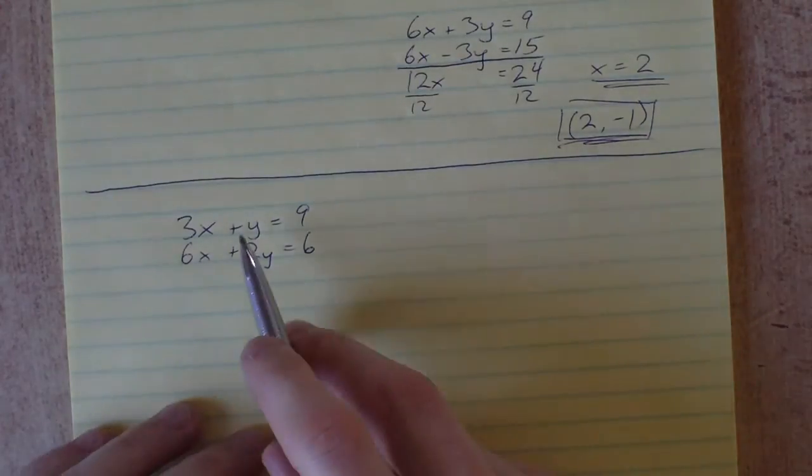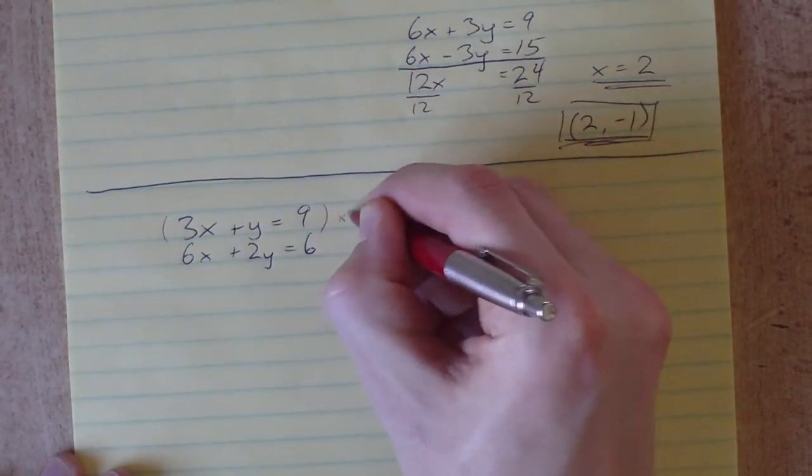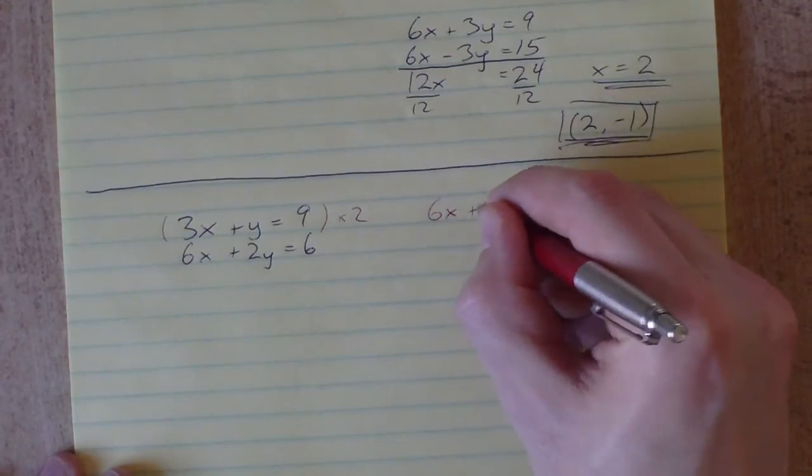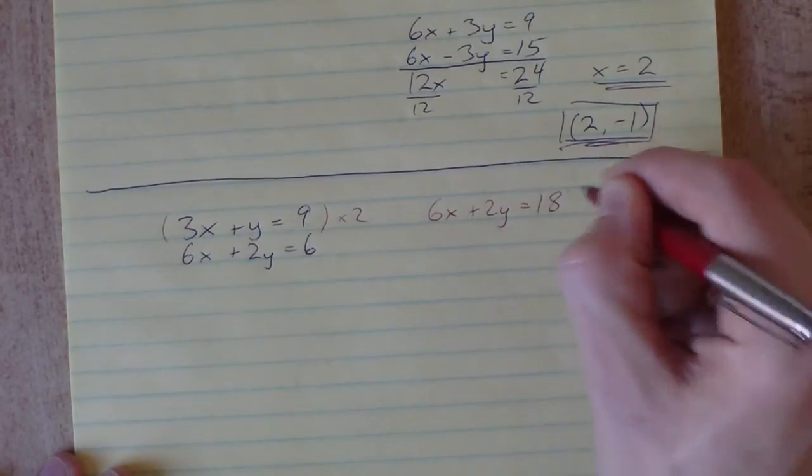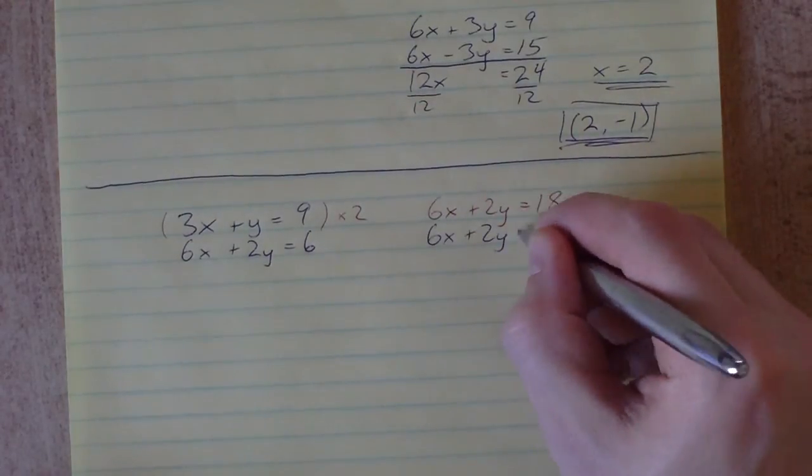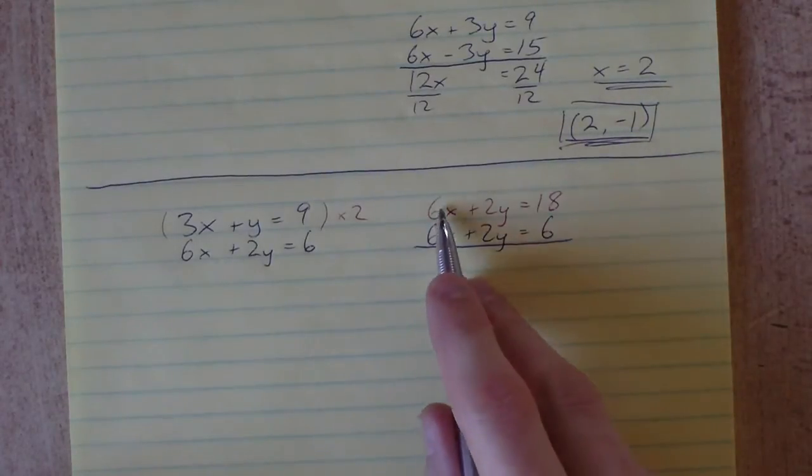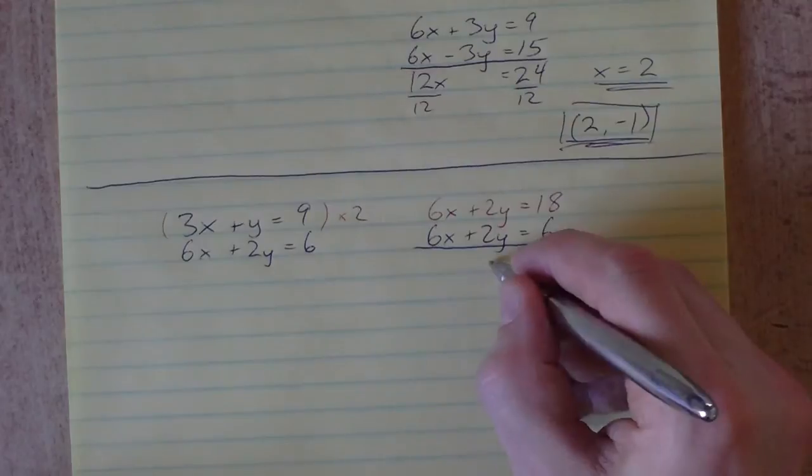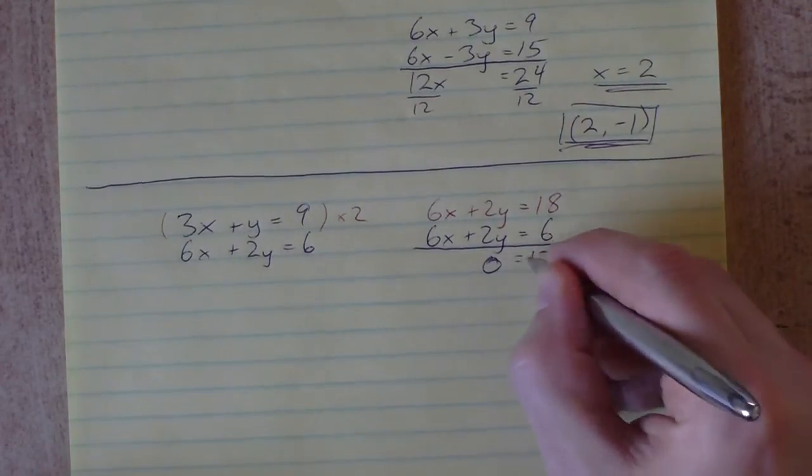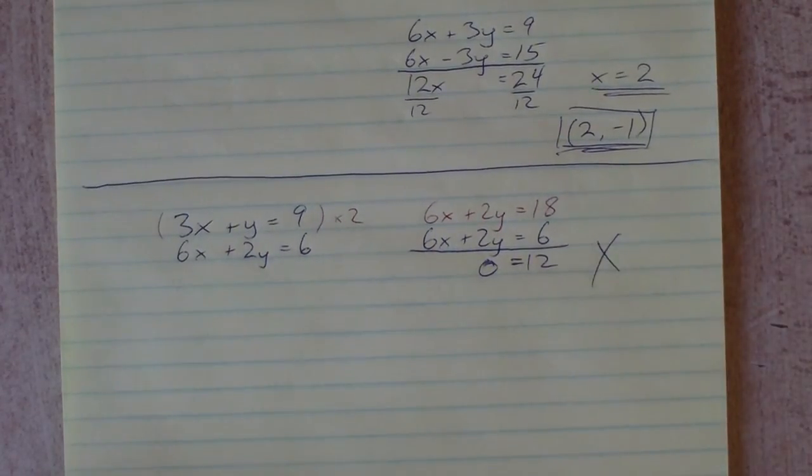Let's try to solve this algebraically. I'll multiply the first equation by 2 to get 6x and 6x in both equations. That gives 6x plus 2y equals 18. The bottom equation is 6x plus 2y equals 6. Subtract one from another: 6x minus 6x gives 0, 2y minus 2y gives 0, and 18 minus 6 gives 12. What I've ended up with is 0 equals 12.